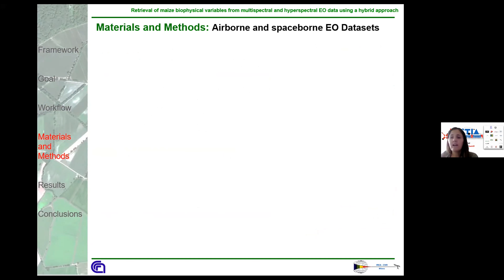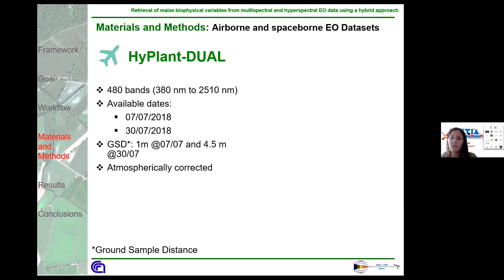Two different types of datasets were used: airborne and spaceborne. For both, we have several images, each scene being observed at different wavelengths and carrying information from different parts of the electromagnetic spectrum. HyBird Dual is an airborne sensor with a total of 480 bands. The images were available on two dates near the period of the field campaign: the 7th and the 30th of July 2018. The ground sample distance is 1 meter in the first image and 4.5 meters in the second.